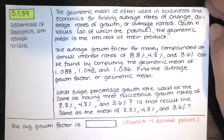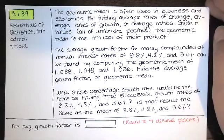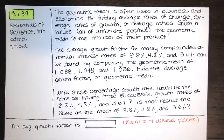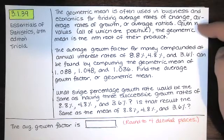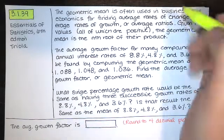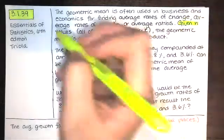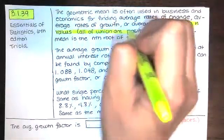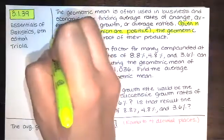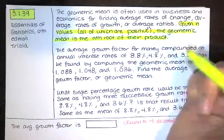The question says, the geometric mean is often used in business and economics for finding average rates of change, average rates of growth, or average ratios. Given n values, this is really important, all of which are positive, the geometric mean is the nth root of their product.